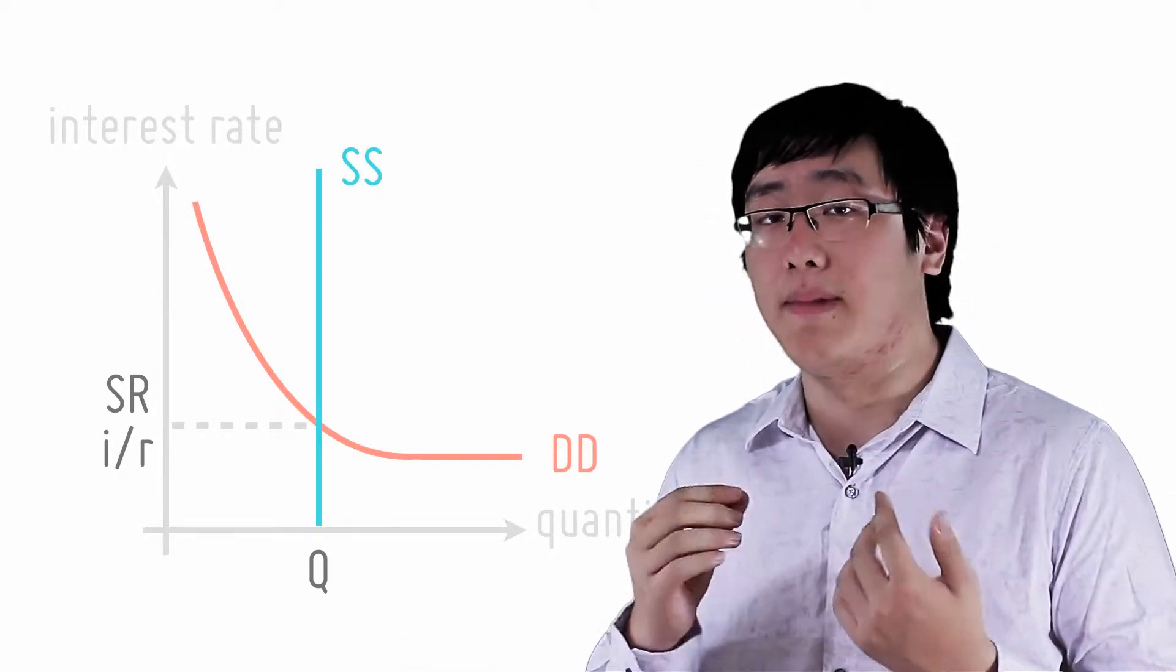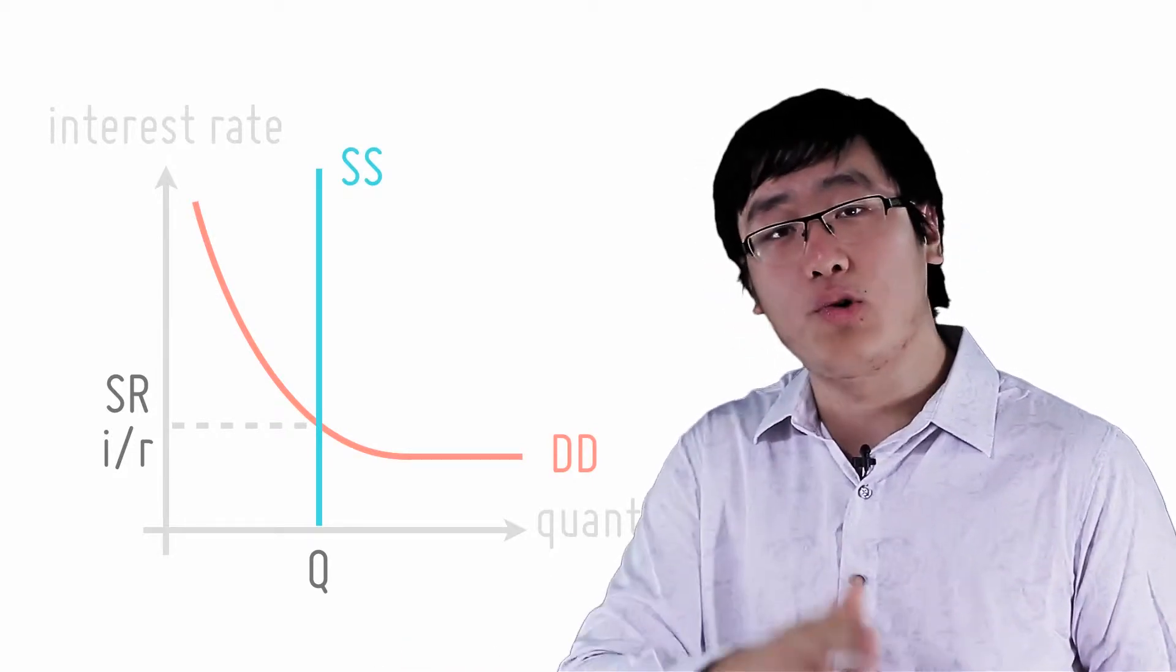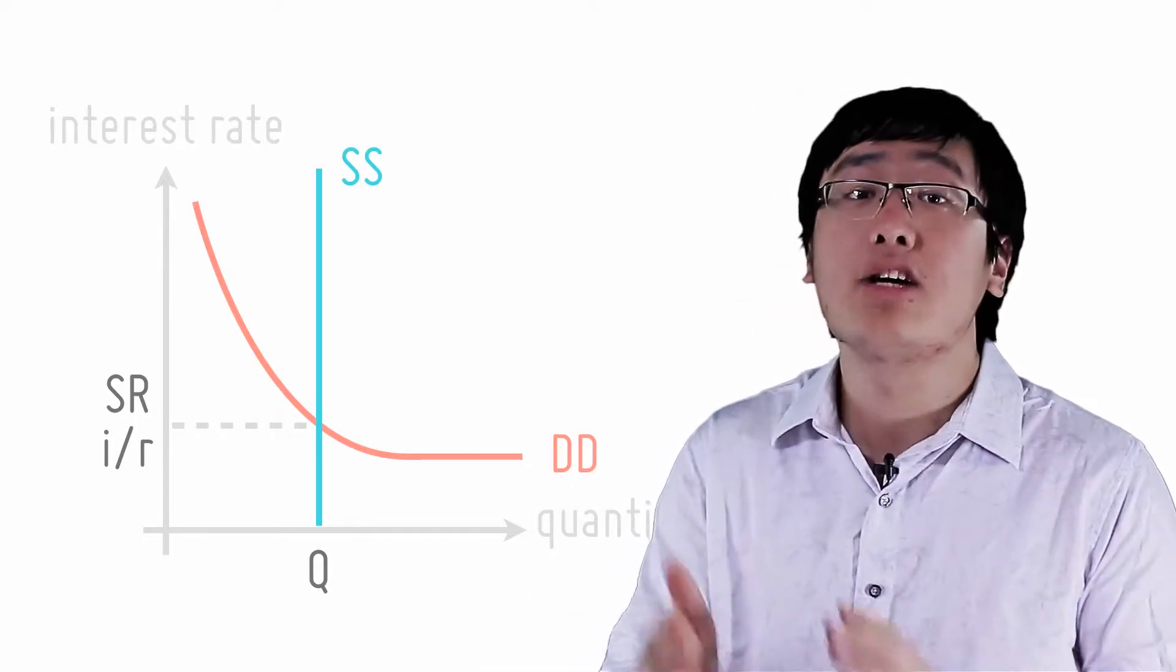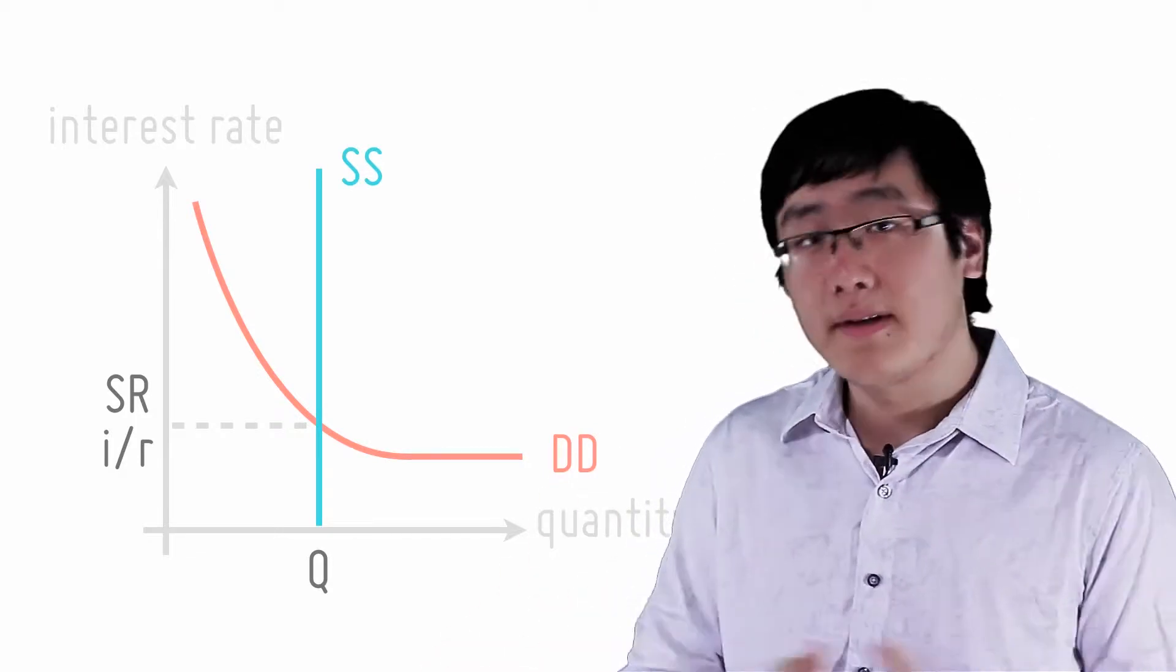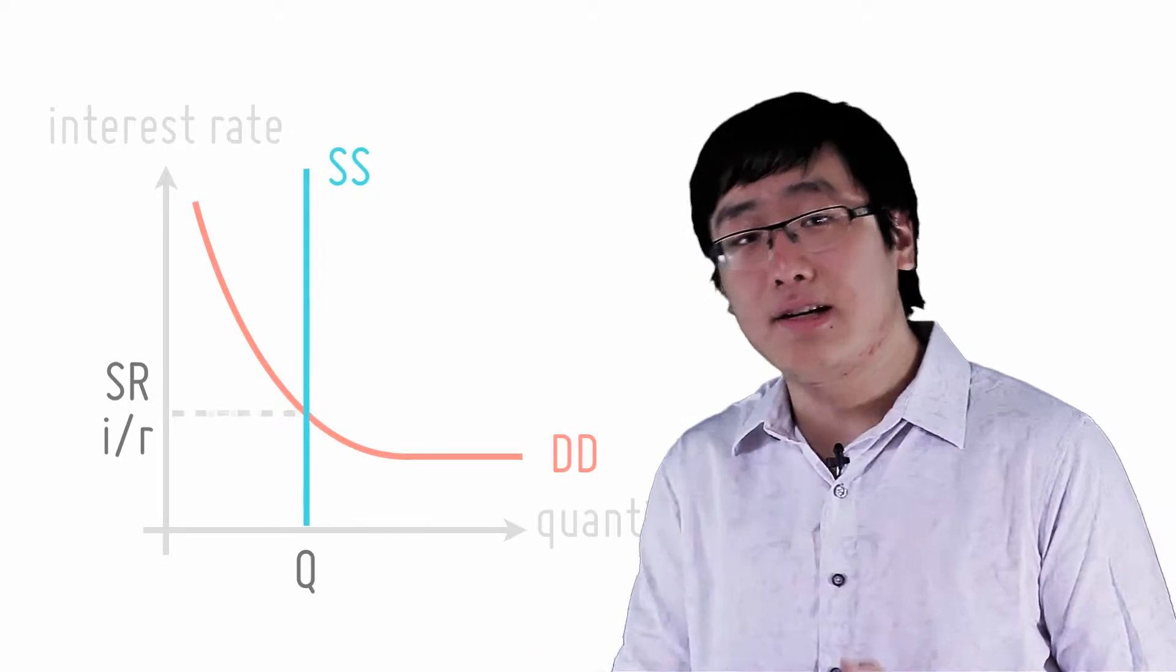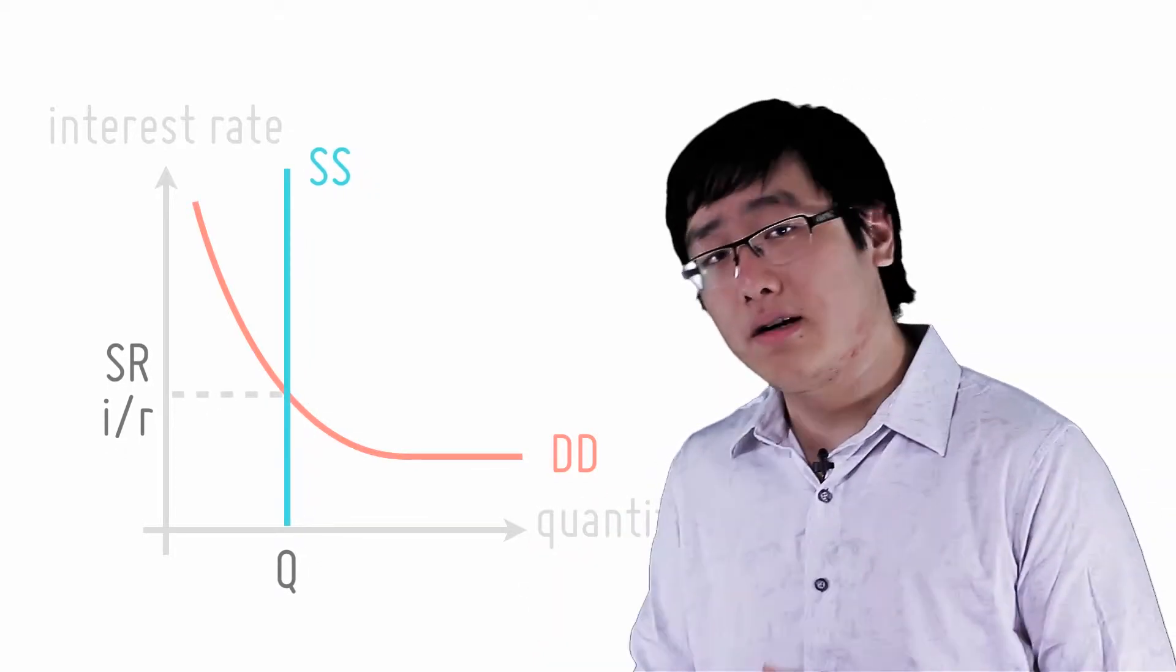Then in the domestic money market, the supply of money increases but the demand on money stays the same, short run interest rate drops. Similarly, if money supply decreases, then interest rate increases.